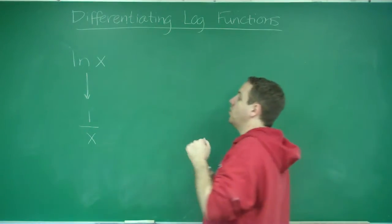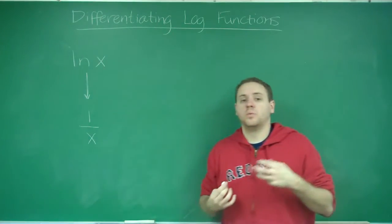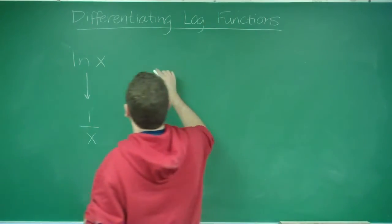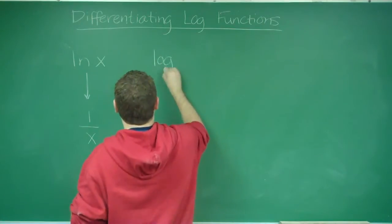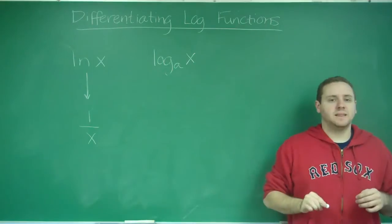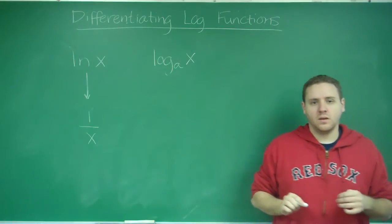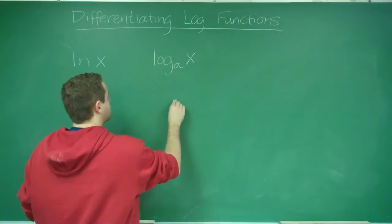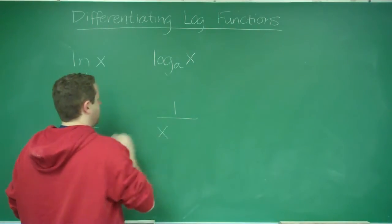Now, what happens if you have a log with a base other than the natural number e? Let's say we had, for example, log of any base a of x, and we wanted to take that derivative. Well, what we would need to do is we're still going to have 1 over x, like you might expect,